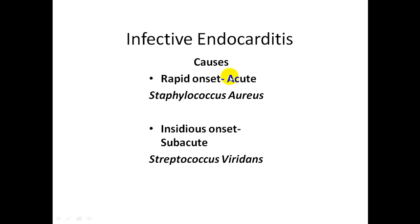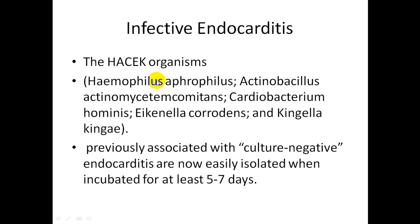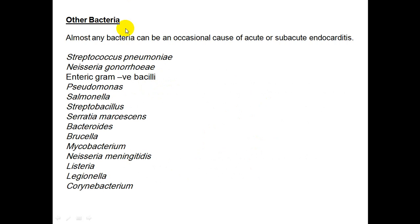The most common causative organism overall is Streptococcus viridans, accounting for more than 75% of cases. Staphylococcus aureus is common in Western nations. Enterococci can cause endocarditis in certain situations. Less common causes include fungi, Pseudomonas, and the HACEK group — a group of fastidious, slowly growing organisms previously associated with culture-negative endocarditis, easily isolated when incubated at 45 to 7 days. Other rare causes include the organisms listed.